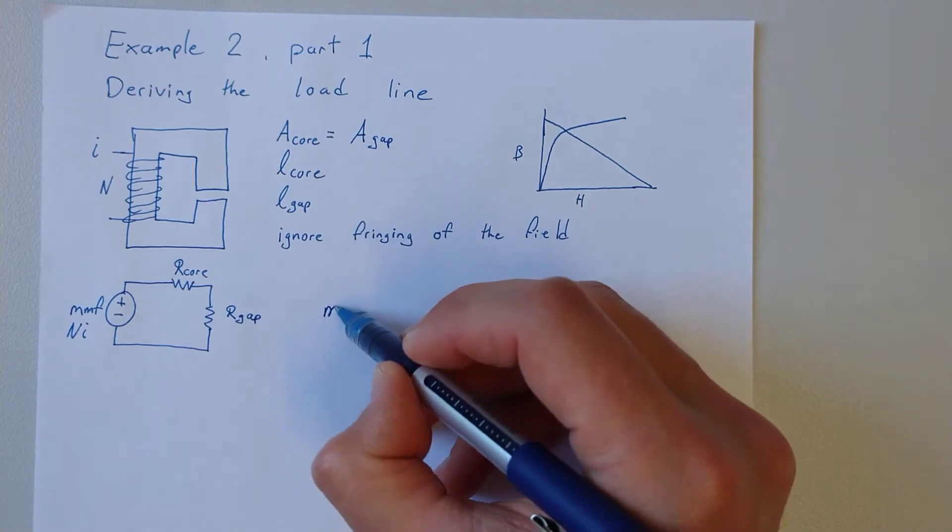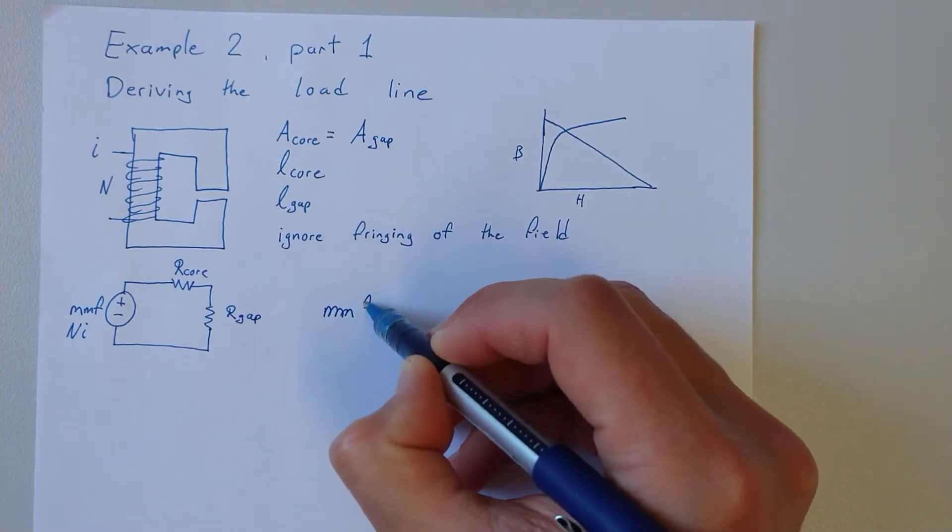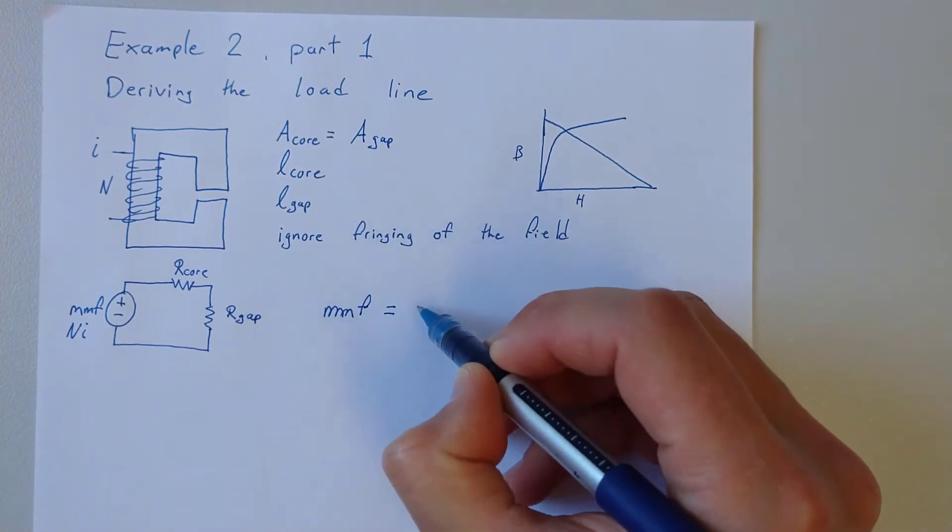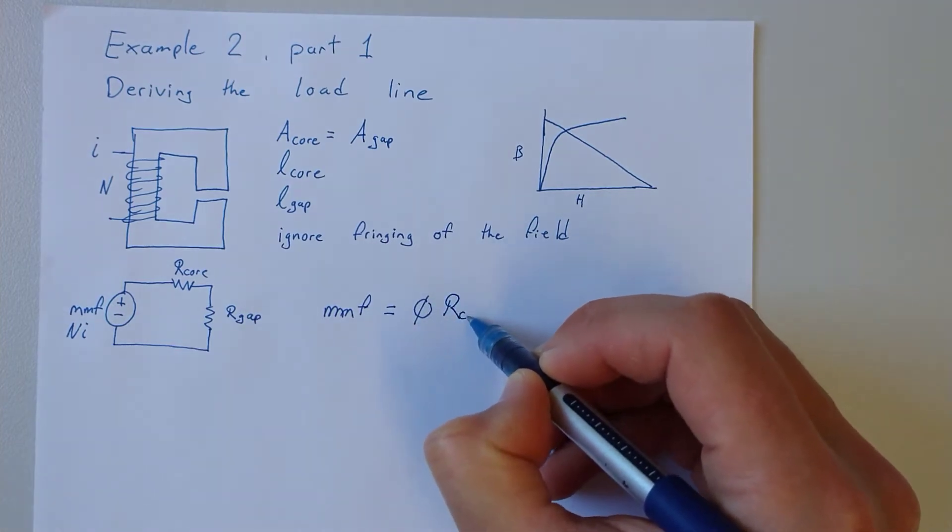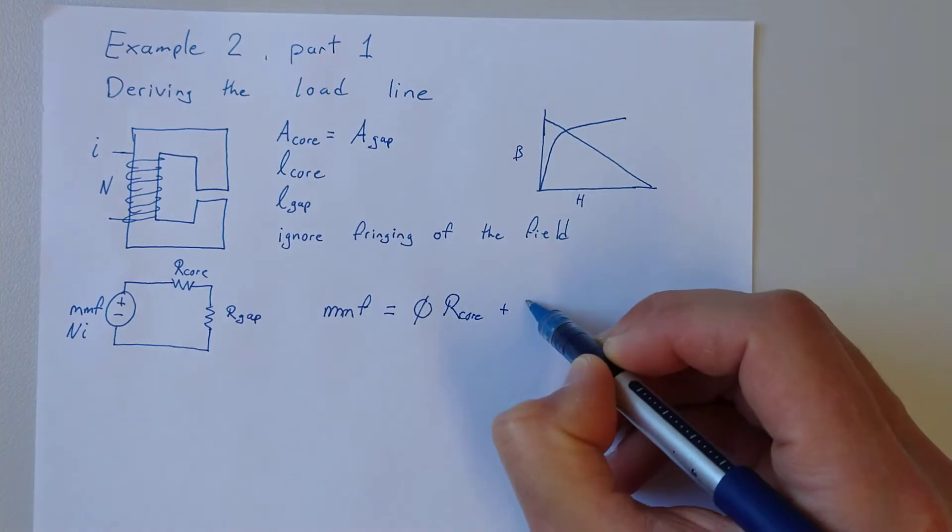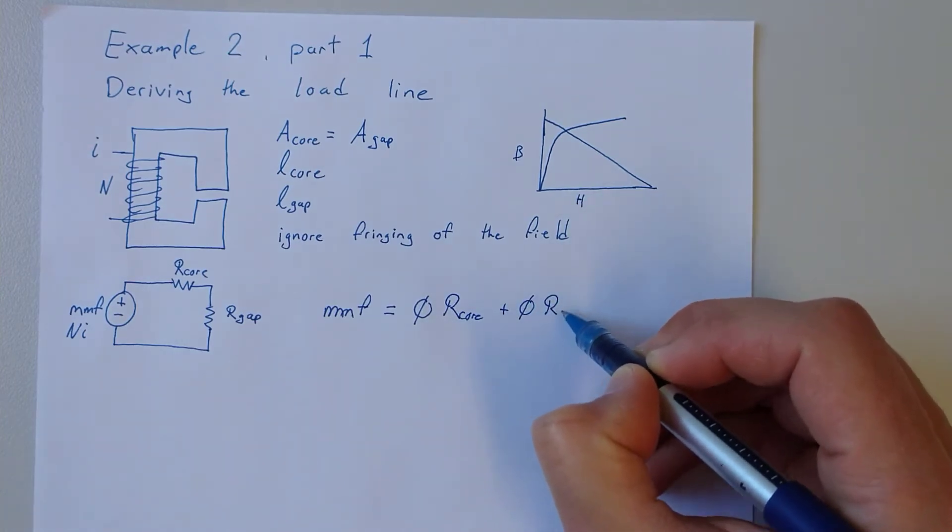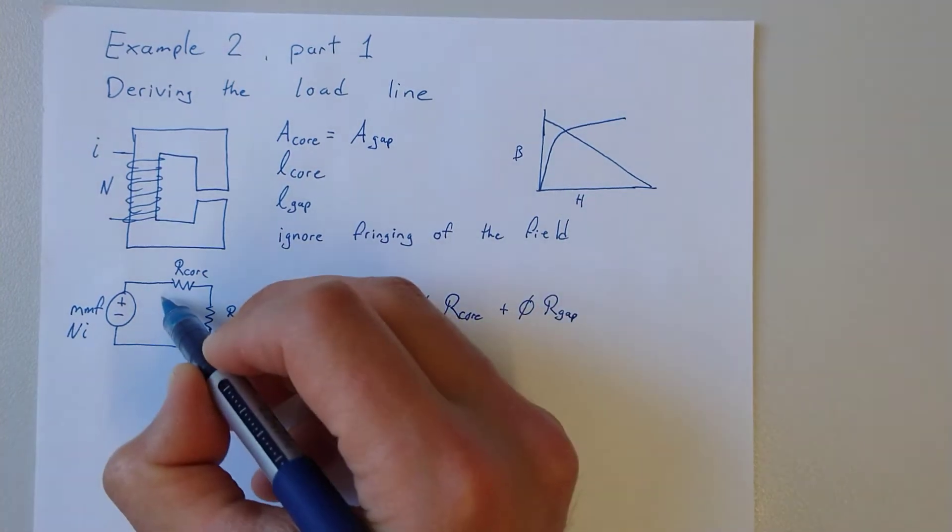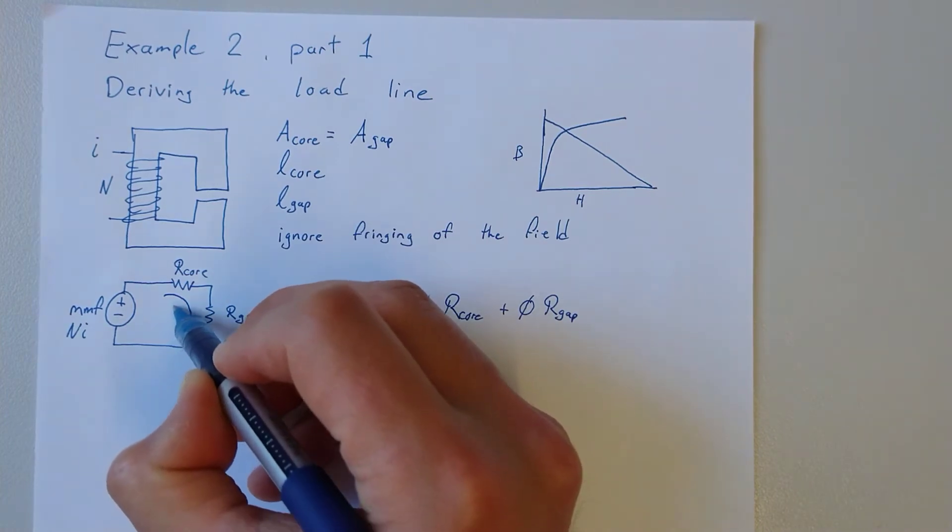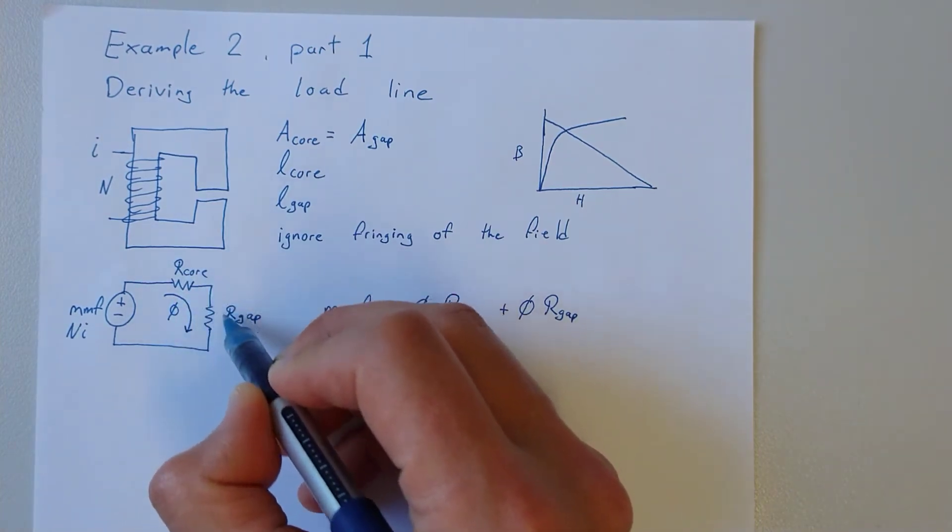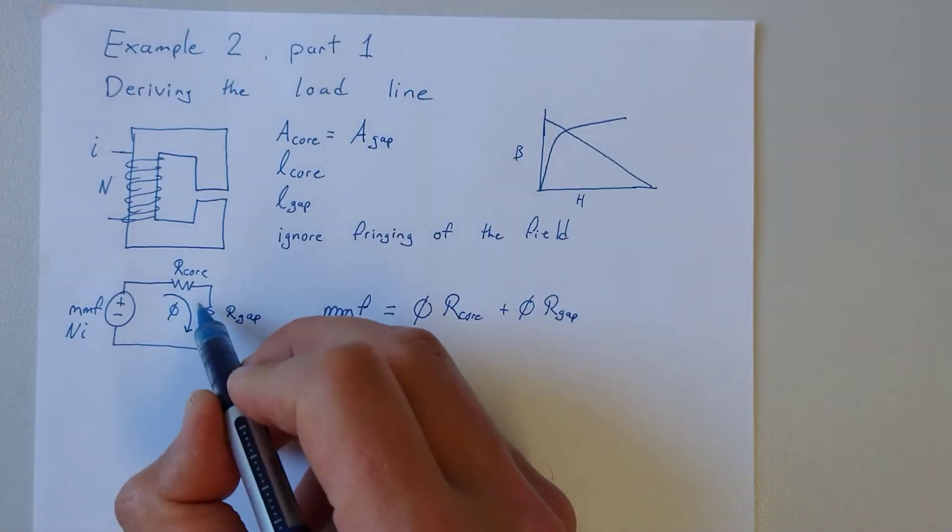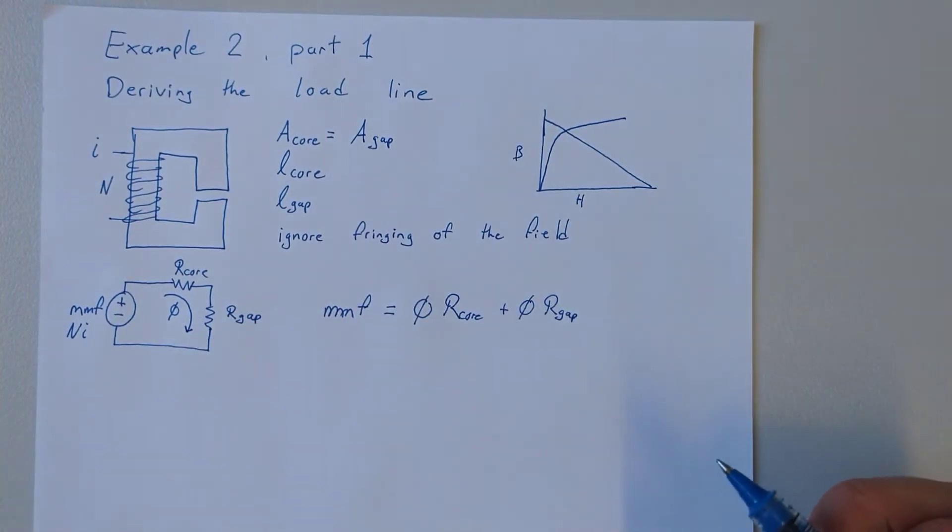That magnetomotive force must be equal to the flux times the reluctance of the core plus the flux times the reluctance of the gap. Just like in Kirchhoff's voltage law, the flux times the reluctance and the sum of the drops here will equal that. So this is just like Ohm's law.